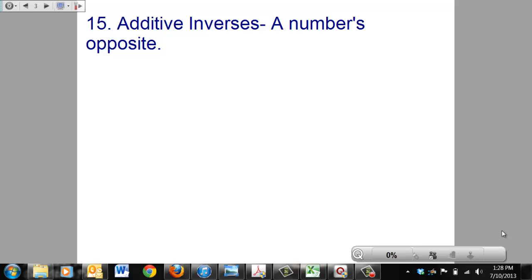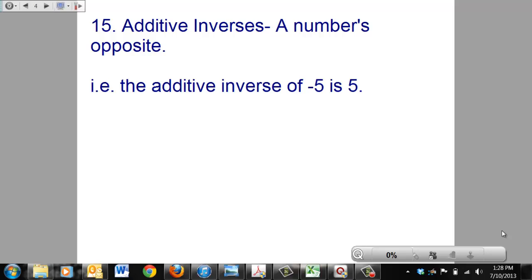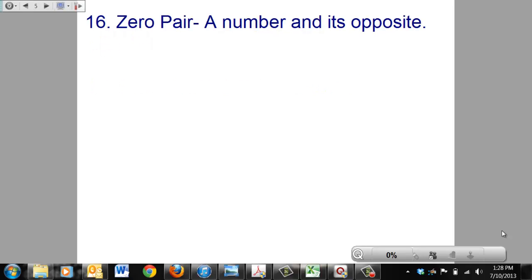Definition. Additive inverses is a number's opposite. For example, negative 5 and 5 are additive inverses of each other. A zero pair is a number and its opposite. 5 and negative 5 are zero pairs.